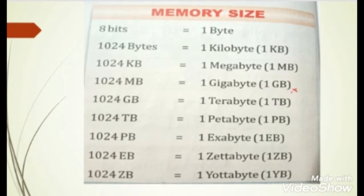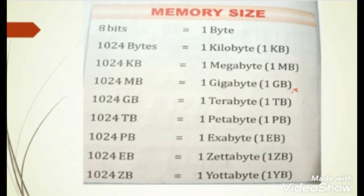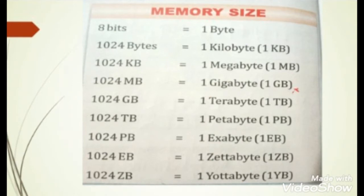1024 petabytes is equal to 1 exabyte. If a computer has 1 exabyte of space, it can store up to 1024 petabytes of data. 1024 exabytes is equal to 1 zettabyte, meaning 1 zettabyte of memory space can store up to 1024 exabytes. 1024 zettabytes is equal to 1 yottabyte, meaning 1 yottabyte space can store up to 1024 zettabytes of data.